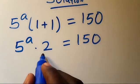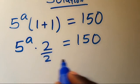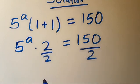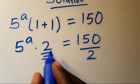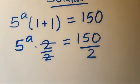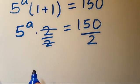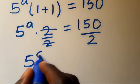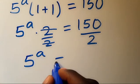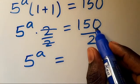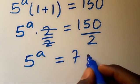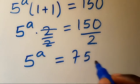So let's divide both sides by 2. These 2s cancel out, so we are going to have 5 to the power of a equals 150 divided by 2, which gives us 75.